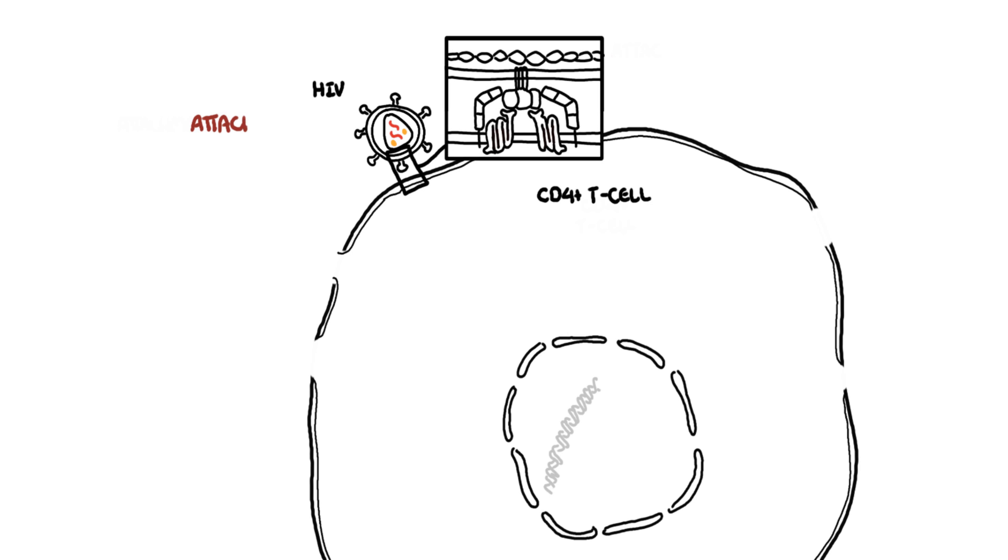The glycoproteins on the envelope of HIV, GP120, binds to CD4 receptors together with the co-receptors CCR5 and CXCR4 on the surface of T cells. This allows fusion of the viral envelope with the cell membrane, which is facilitated by the glycoprotein GP41.